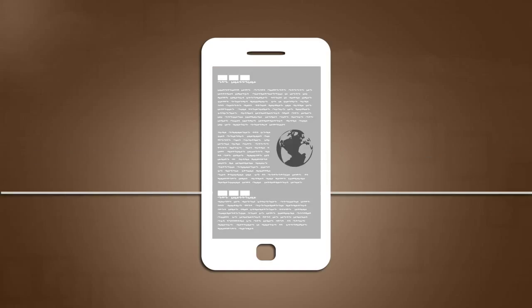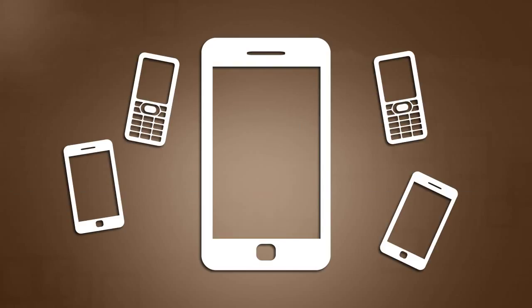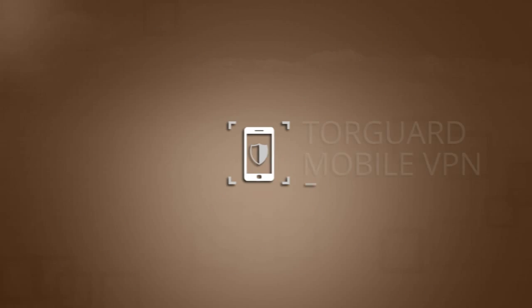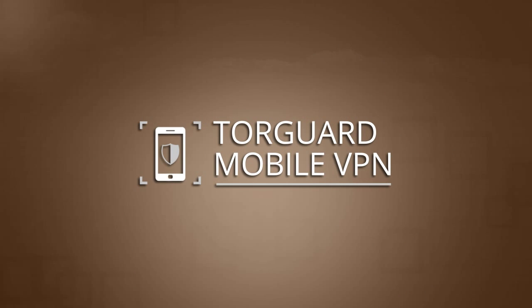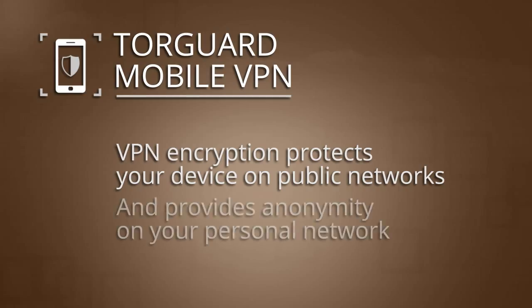As we become increasingly dependent on mobile devices, it is important to continue to be protective of our private data. With TorGuard Mobile VPN, you can connect your mobile device to any Wi-Fi network without fear of anyone eavesdropping on your usage or stealing your personal information. The same VPN encryption that protects you at public Wi-Fi hotspots can also provide anonymity and privacy from your internet service provider.